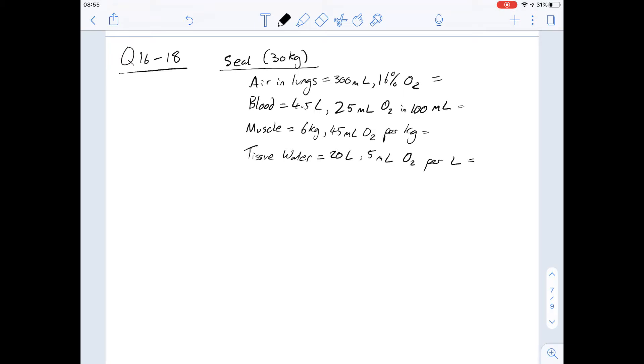Question 16 says, according to Table 1, most of the seal's oxygen is located in which tissue? We're given a table here and I've copied out the relevant part with the different areas in which oxygen is stored. In the lungs, we've got 16% of 300ml being oxygen, so that's going to be around 20ml of oxygen in the lungs.